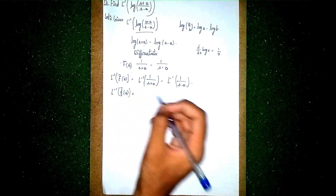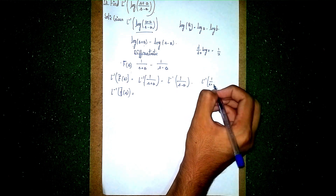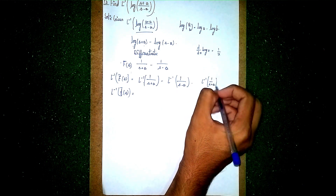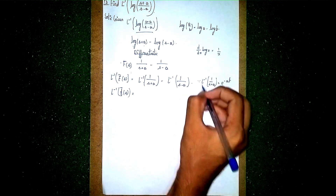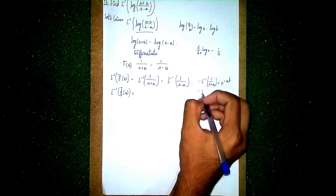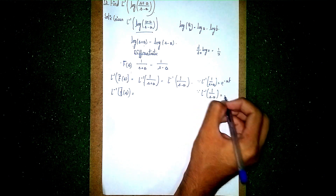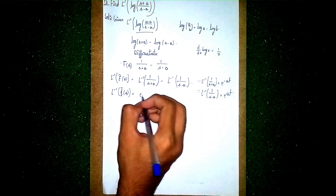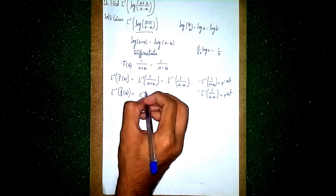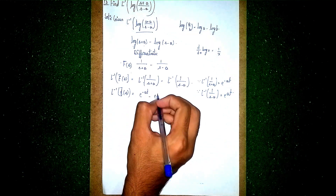Using the known formulas: Laplace inverse of 1/(s + a) equals e^(−at), and Laplace inverse of 1/(s − a) equals e^(at). So we get e^(−at) minus e^(at).